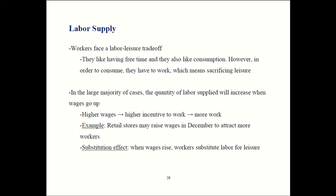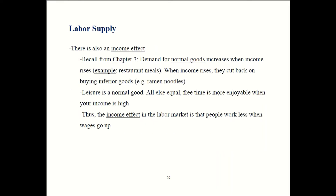There's also something called the income effect. Back in Chapter 3, we learned about normal goods versus inferior goods. Most goods are normal goods, meaning when your income rises, you consume more of them. A classic example is restaurant meals — if you get more money, you can afford to eat out more and you probably will. If you lose your job or the economy goes into recession, one of the first things people cut is going out to restaurants. So restaurants are pretty sensitive to income and the overall state of the economy.